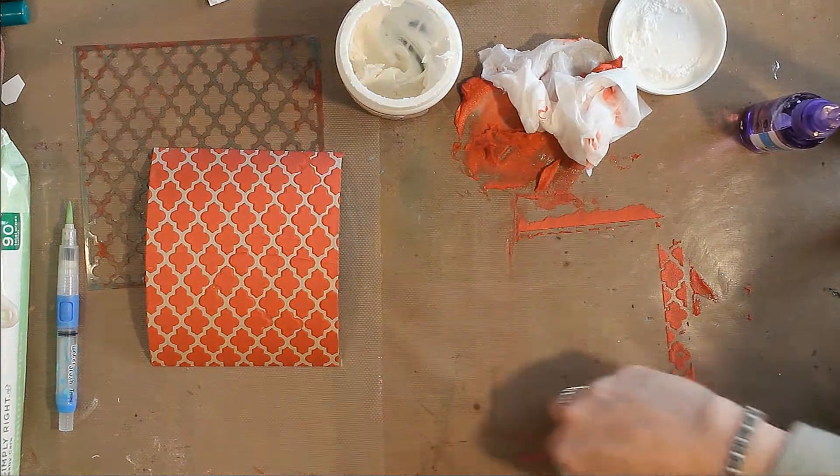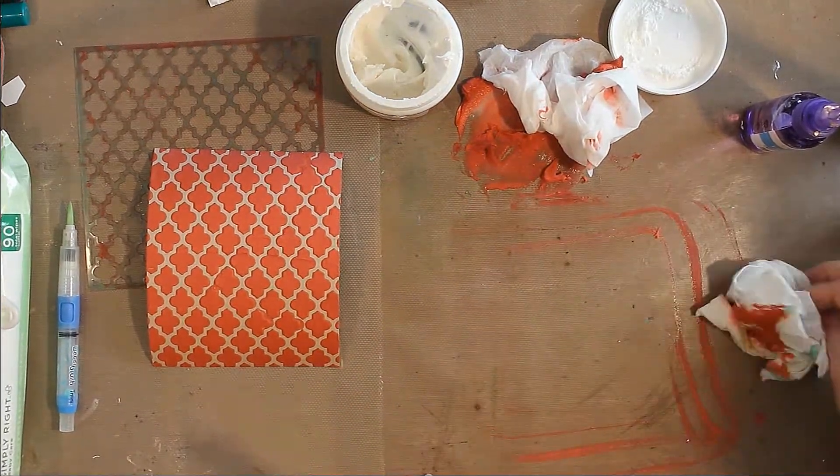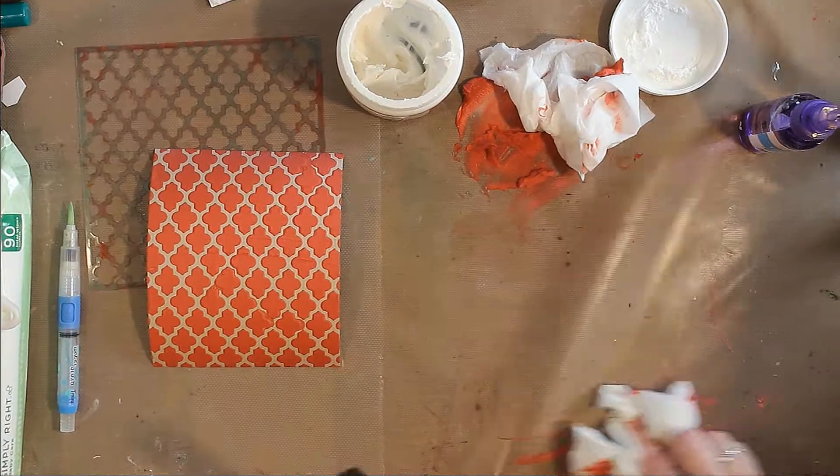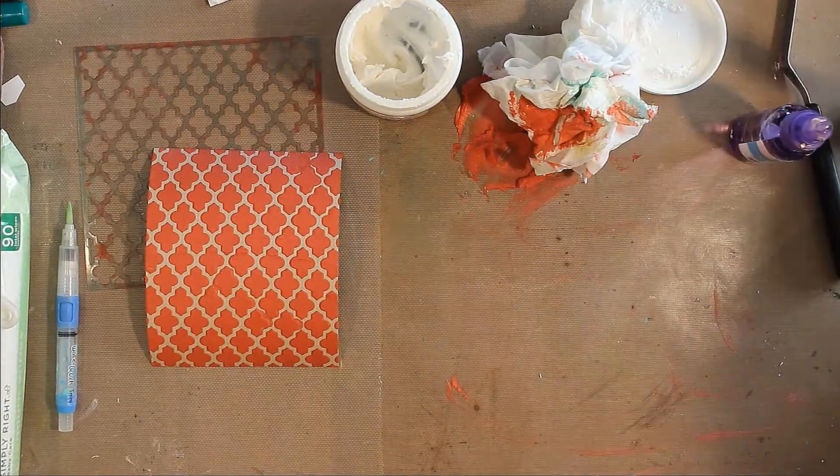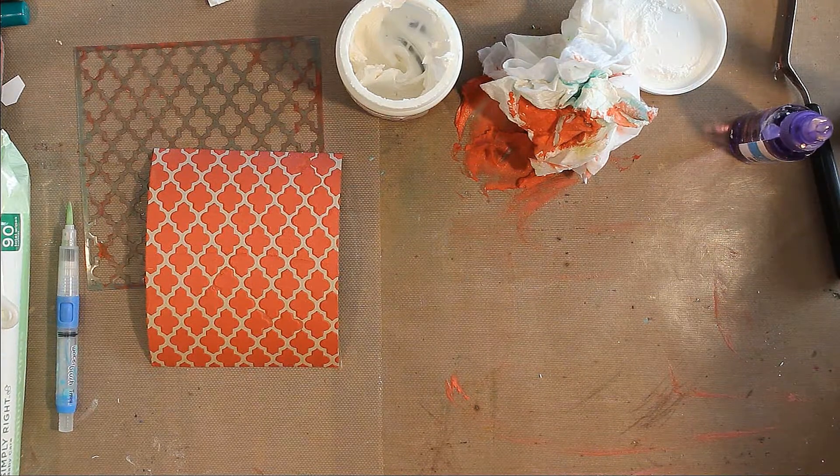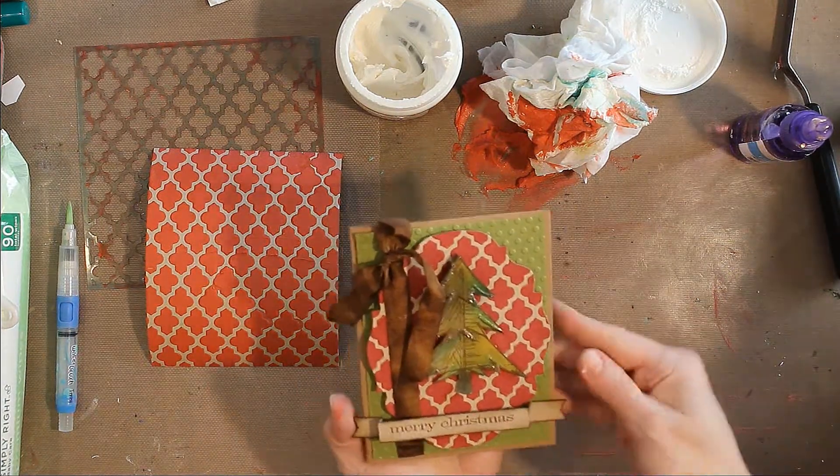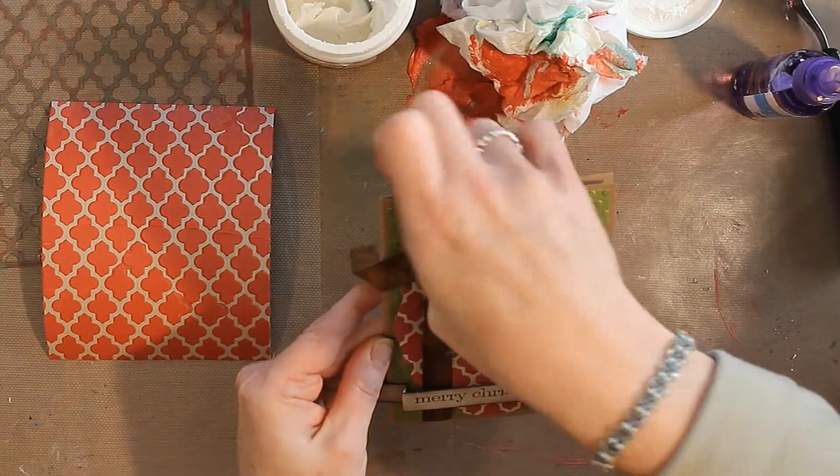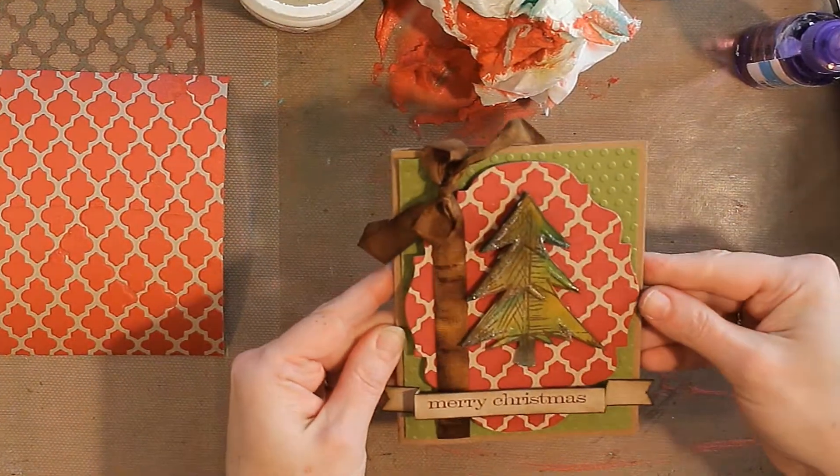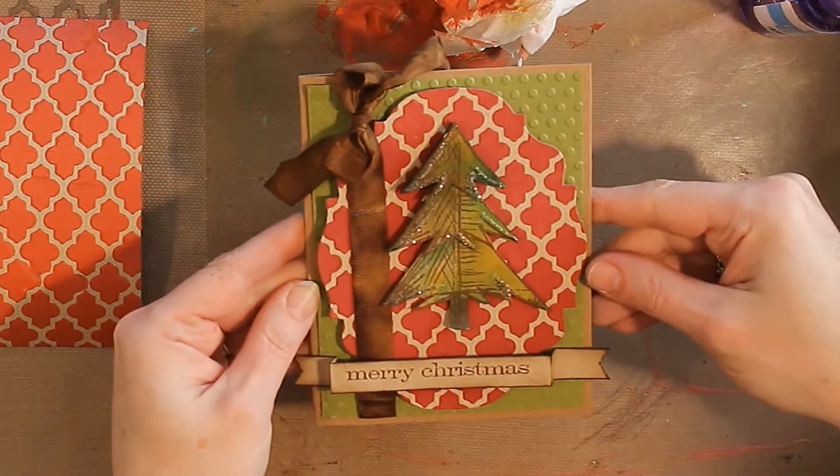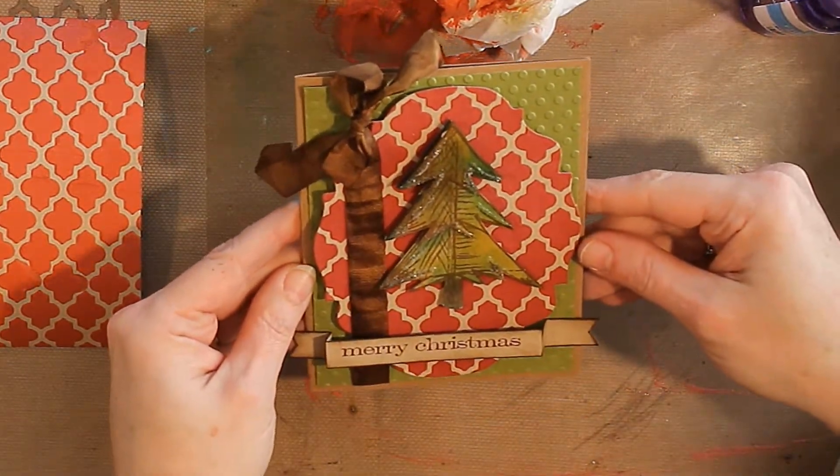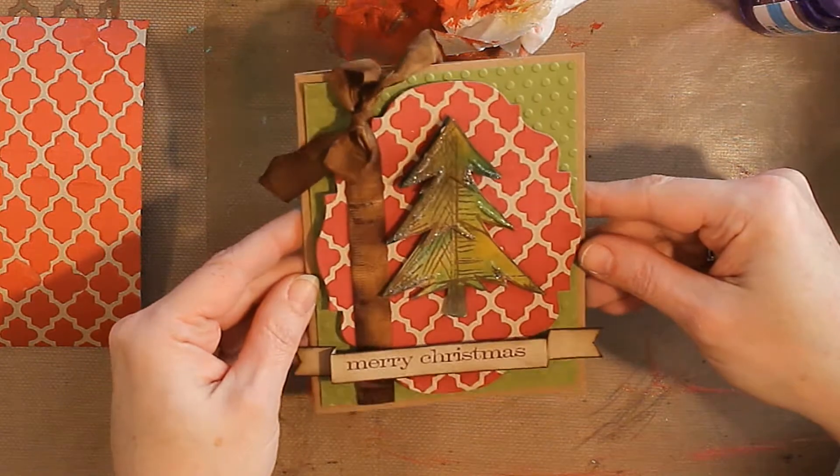And I have a finished card to show you here. I used the Tim Holtz Baroque die on my emboss piece. And then layered one of the blueprint stencils. It was the Christmas tree. I cut out several layers.